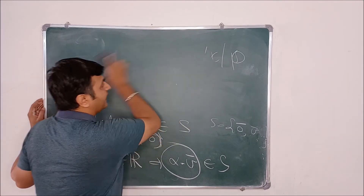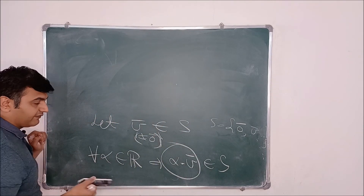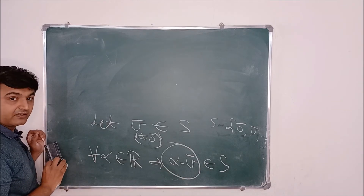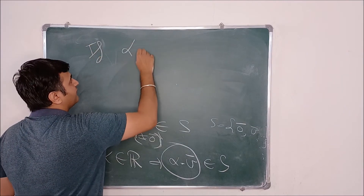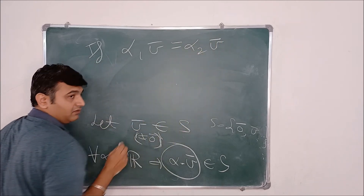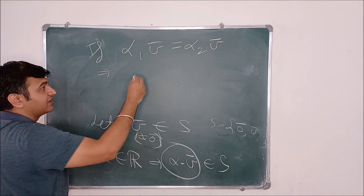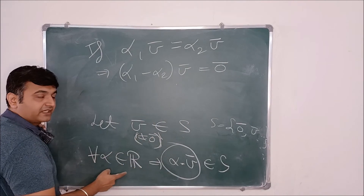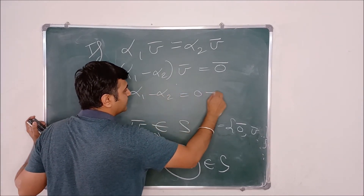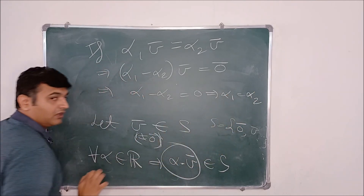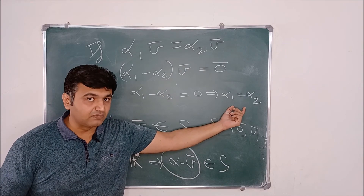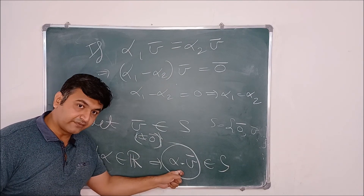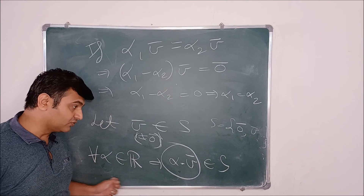One also has to argue why this collection of vectors is actually infinite. If I take two and three, then 2v̄ and 3v̄ — will those be different or the same? They will be different. Why? Because if α₁ · v̄ = α₂ · v̄, that means (α₁ − α₂) · v̄ = 0. But v̄ is a non-zero vector, so this implies α₁ − α₂ = 0, which means α₁ = α₂. So these two vectors are equal if and only if the scalars are equal. For different scalars you get different vectors, and since there are infinitely many scalars, there are infinitely many vectors.